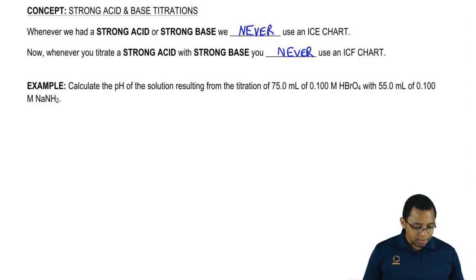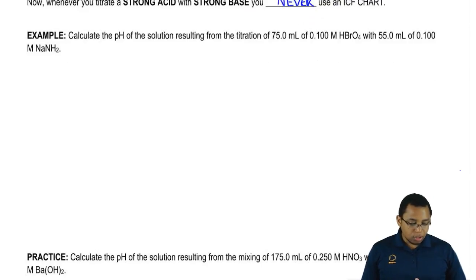Let's take a look here. Calculate the pH of the solution resulting from the titration of 75 mLs of 0.100 molar HBrO4 with 55 mLs of 0.100 molar NaNH2. Remember this right here is a strong acid. This right here is a strong base.